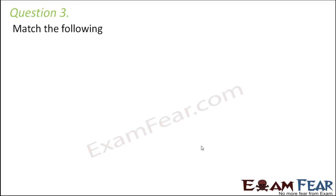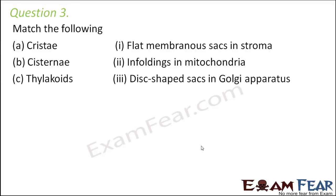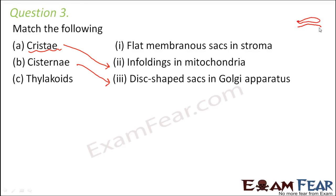The next question: match the following — cristae, cisternae, and thylakoids. Cristae are part of the mitochondria. The mitochondria has an outer and inner layer; the inner layer is deeply folded, and each fold is called a crista. Cisternae are part of the Golgi apparatus — the disc-like structures arranged in parallel, each of which is called a cisterna. Thylakoids are present inside the chloroplast, within the stroma of the chloroplast.